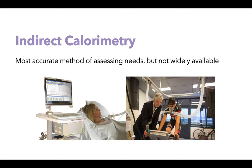Indirect calorimetry is the most accurate method of assessing calorie needs but is not widely available. In a laboratory setting, the person rests on a bed for about 20–30 minutes while the machine measures the exchange of carbon dioxide and oxygen, allowing assessment of calorie needs. Another use for indirect calorimetry is with athletes: you can hook an athlete up to the machine during their exercise bout to determine how many calories they burn, which helps a sports dietitian appropriately fuel the athlete.